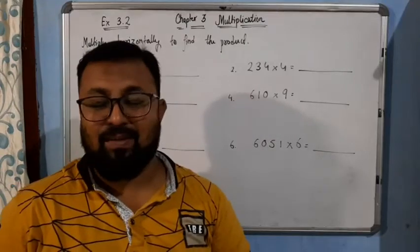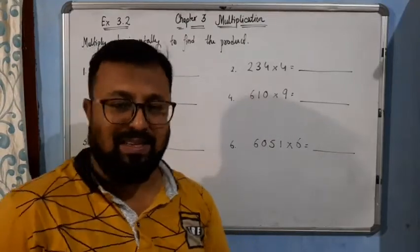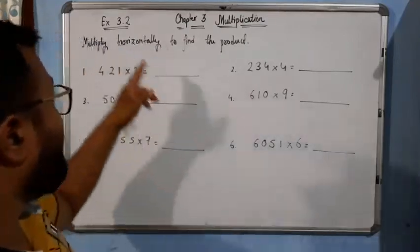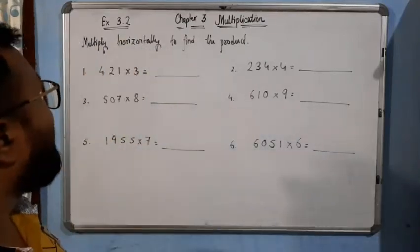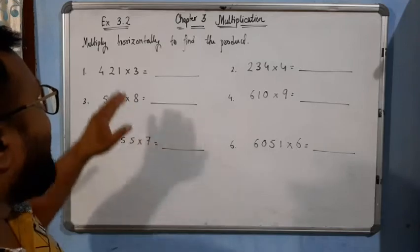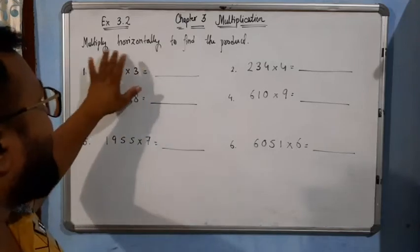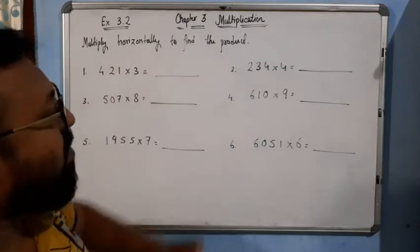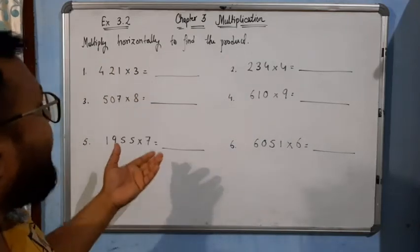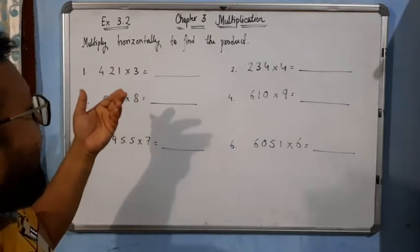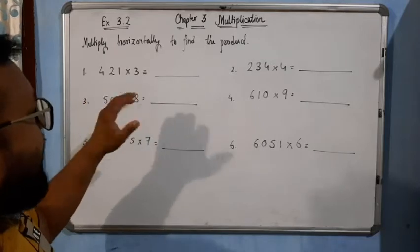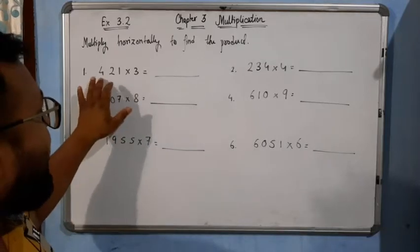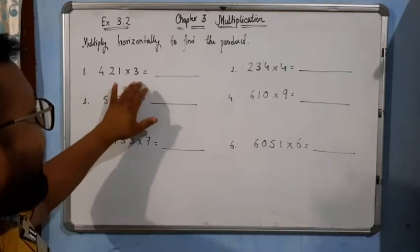Hello students! Now come to the next exercise, Exercise 3.2. Here we will multiply horizontally to find the product. Earlier we did multiply in column. Now we will multiply horizontally.